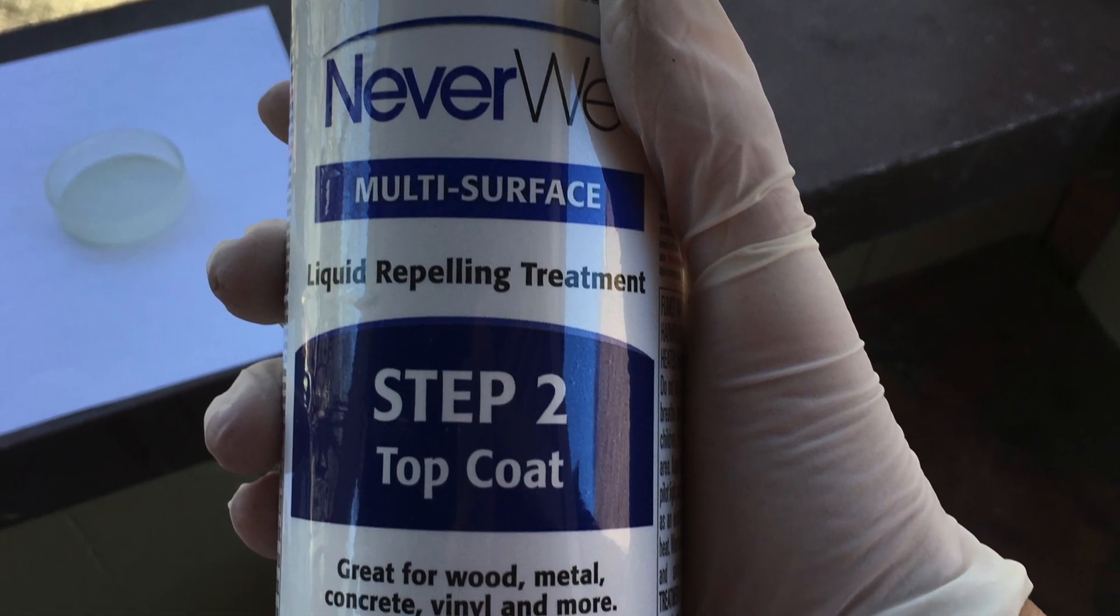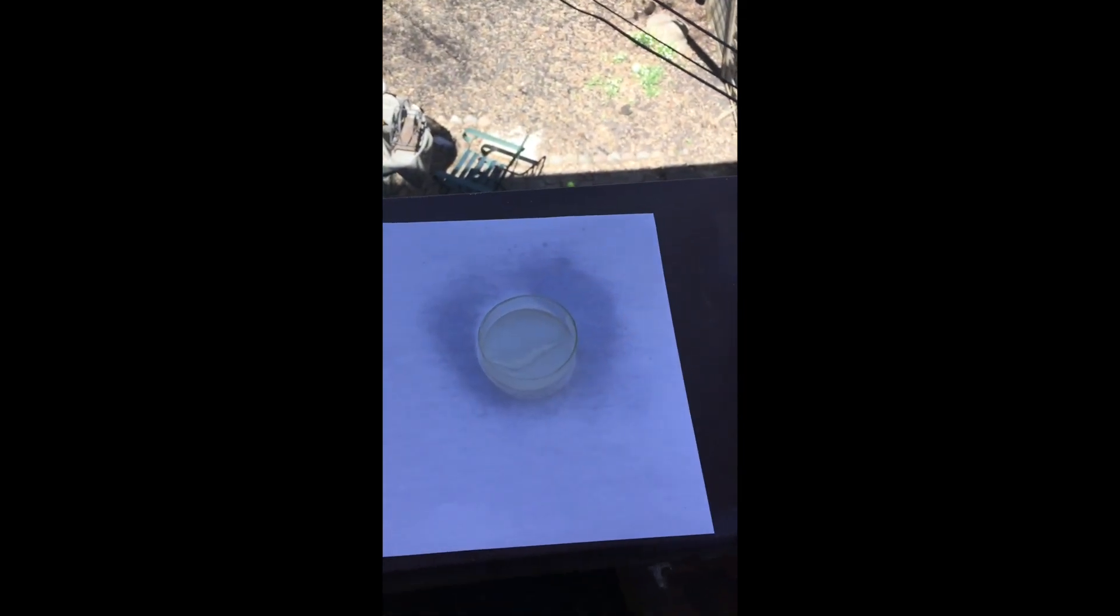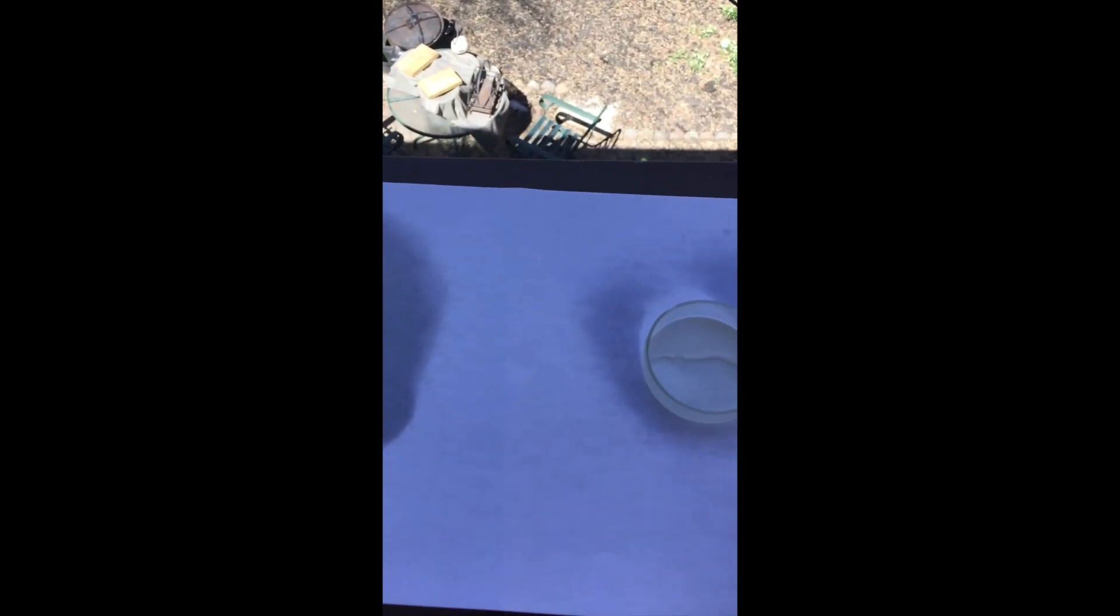After 30 minutes, apply the top coat. Do the same thing you did with the base coat by applying three layers, rotating your petri dish or whatever substrate you're using between each layer to get a uniform coating along the sides. Once this is done, wait 30 minutes again for the substrate to dry.